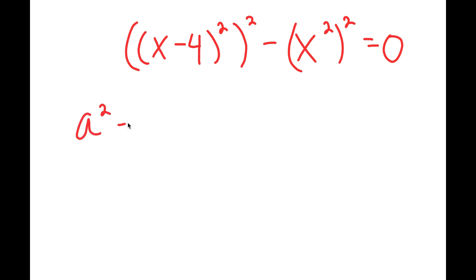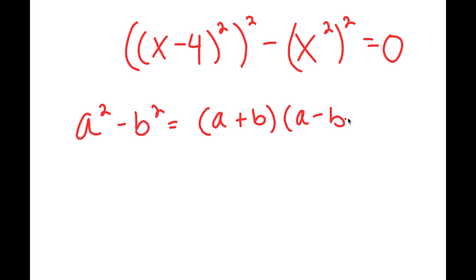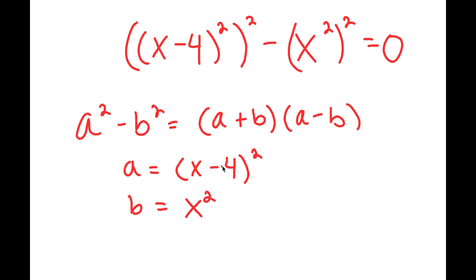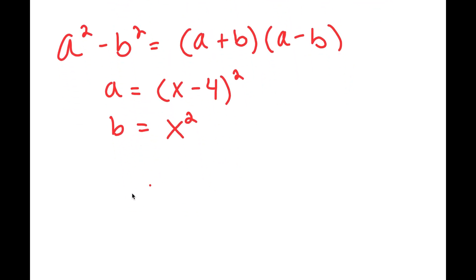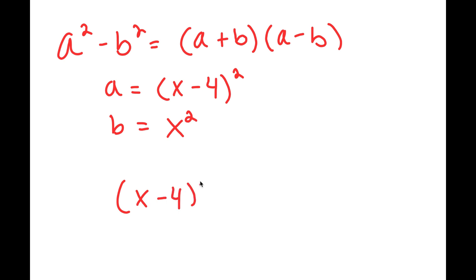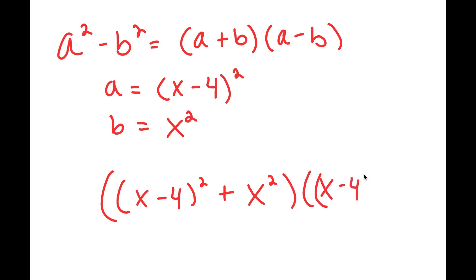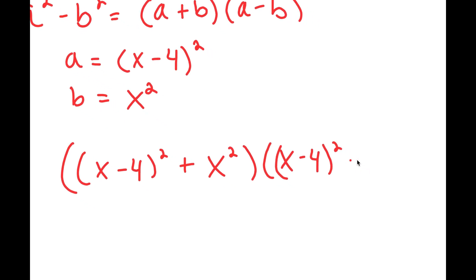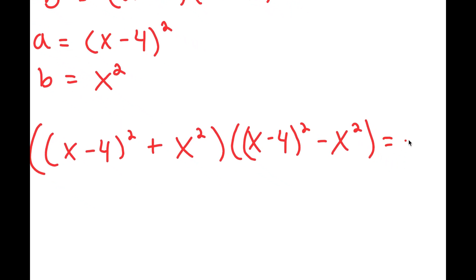Now I can use the property a squared minus b squared is equal to a plus b times a minus b. In this case, a is x minus 4 squared and b is x squared. So this turns into x minus 4 squared plus x squared times x minus 4 squared minus x squared is equal to 0.